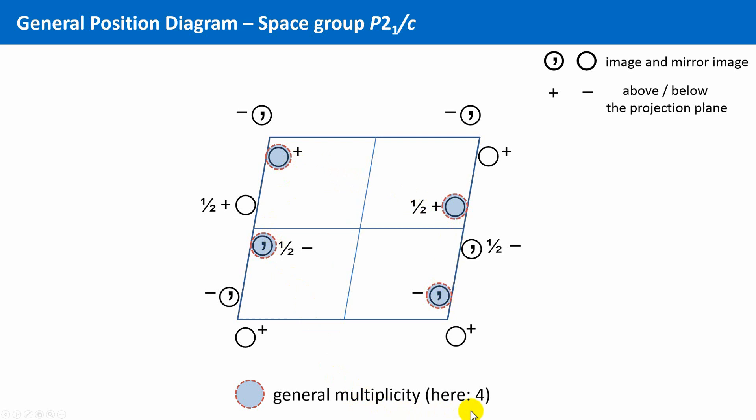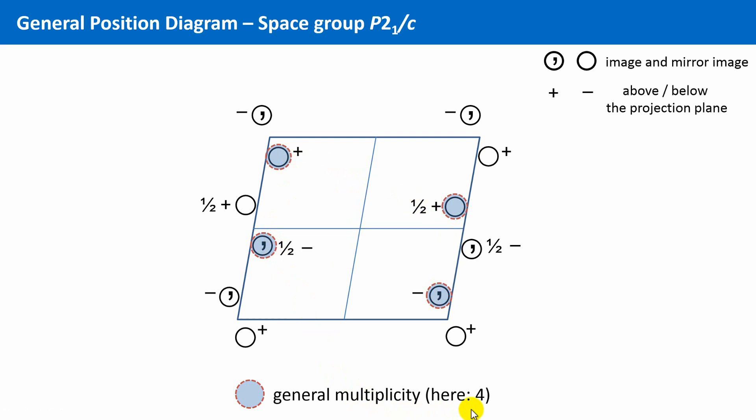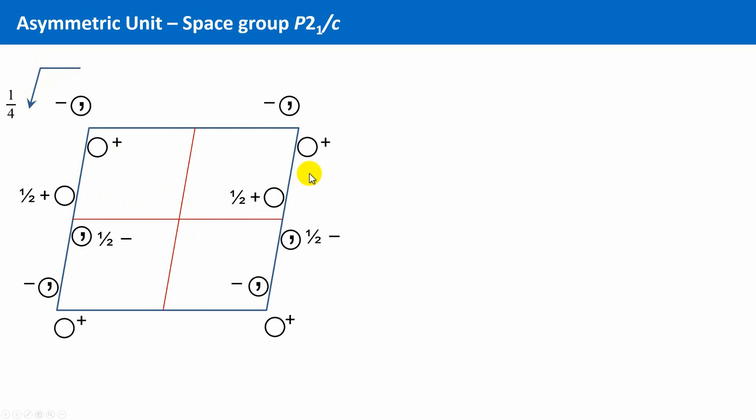Okay, now only one thing is left that I wanted to teach in this unit. Maybe you already noticed these thin lines. They do not symbolize mirror planes. We only have a mirror plane that belongs to the glide plane C, which is parallel to the projection plane. So, what do these lines indicate? They indicate the area of the asymmetric unit. So, let me try to explain this asymmetric unit. Well, we learned that by pure translation of the unit cell in all three spatial directions, the whole crystal is built.